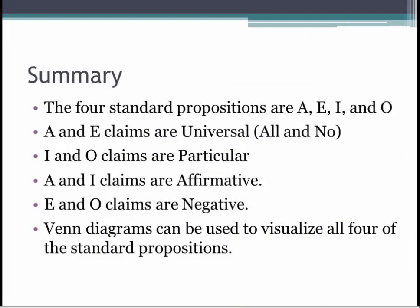In summary, the four standard propositions are the A, E, I, and O claims. A and E claims have the quantity of being universal — that is, all or no. The I and O claims have the quantity of being particular. The A and I claims have the quality of being affirmative, and the E and O claims have the quality of being negative.